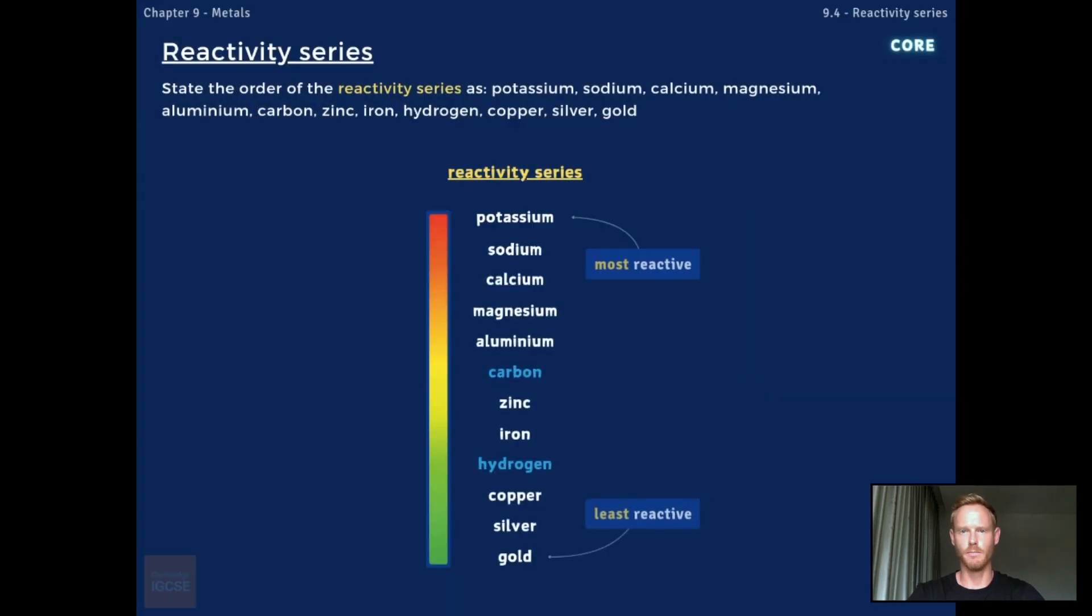The reactivity series of metals is a chart listing metals in order of decreasing reactivity. The order of the reactivity series is potassium, sodium, calcium, magnesium, aluminium, carbon, zinc, iron, hydrogen, copper, silver, and gold.